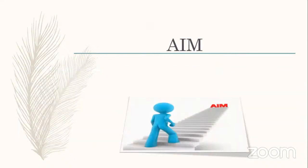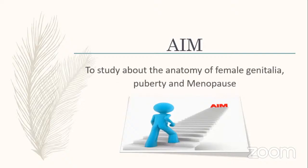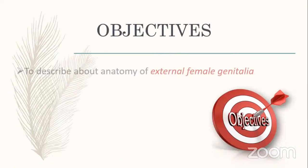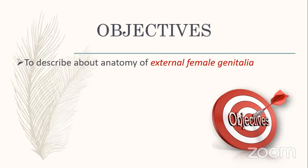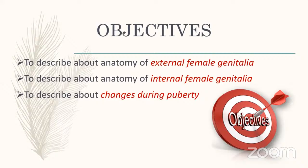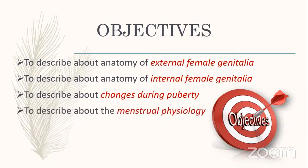The aim of this session is to study the anatomy of female genitalia, puberty, and menopause. The objectives are: to describe the anatomy of external female genitalia, then internal female genitalia, then to describe changes during puberty — under which we will discuss menstrual physiology.